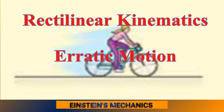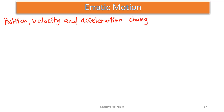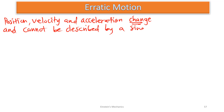What do we mean by erratic motion? In this type of motion, please pay attention — the position, the velocity, and the acceleration are always changing. And it cannot be described by a single continuous function; it cannot be described by just a single mathematical expression.